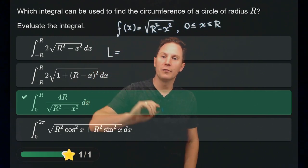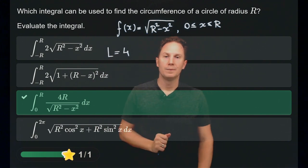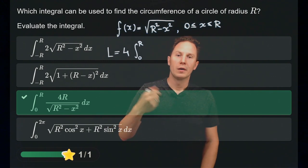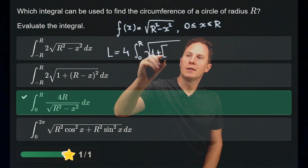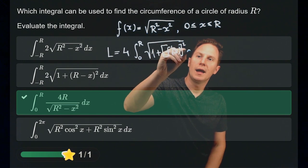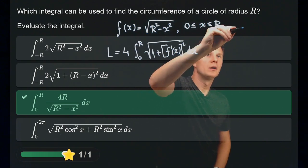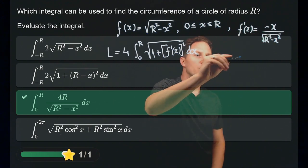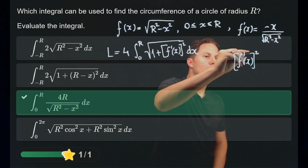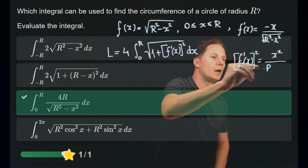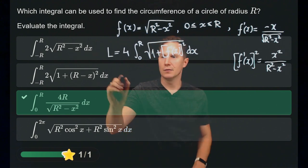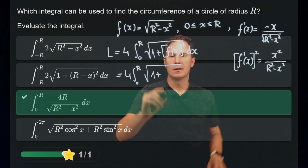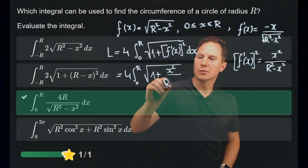We get the full circumference by multiplying that arc length by 4. The arc length is given by 4 times the definite integral from 0 to r of the square root of 1 plus f prime of x squared, dx. The derivative of f is −x over √(r² − x²), so its square is x² / (r² − x²). Therefore the integral becomes 4 times the integral from 0 to r of the square root of 1 plus x² / (r² − x²), dx.